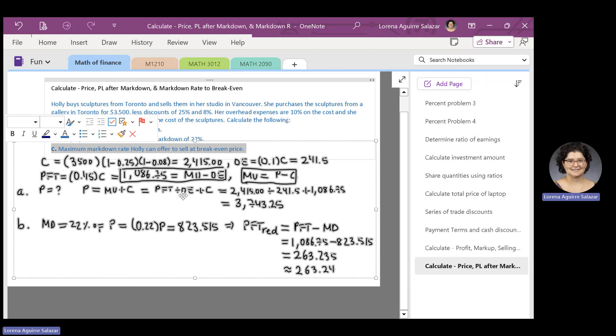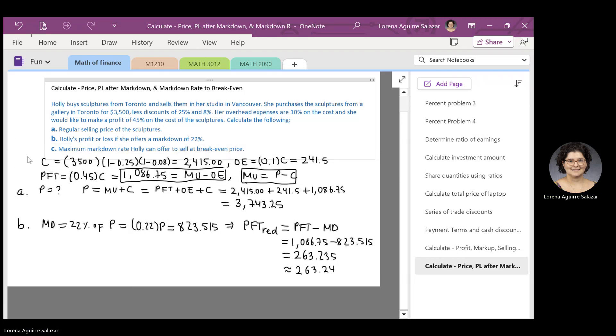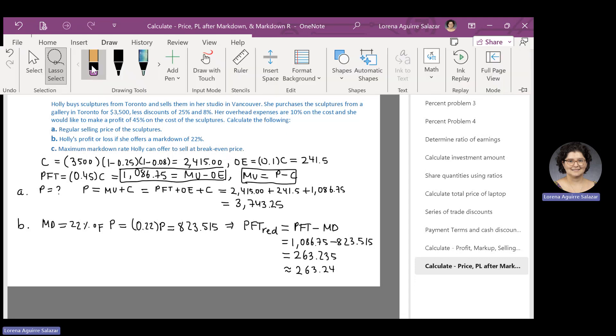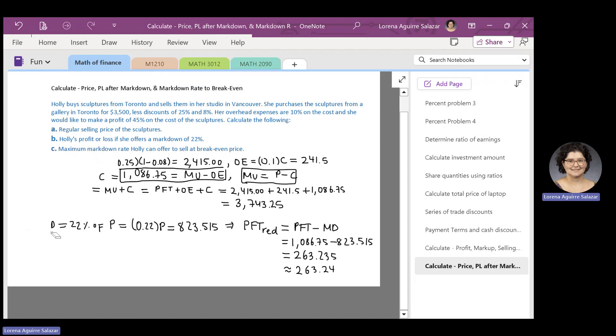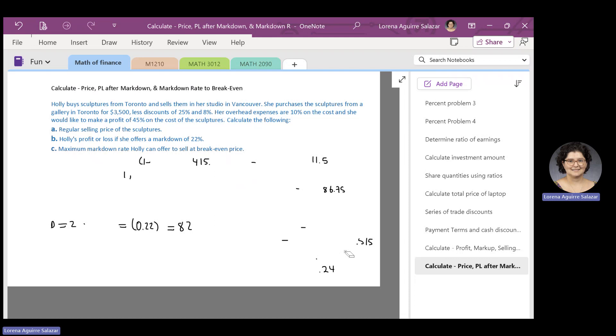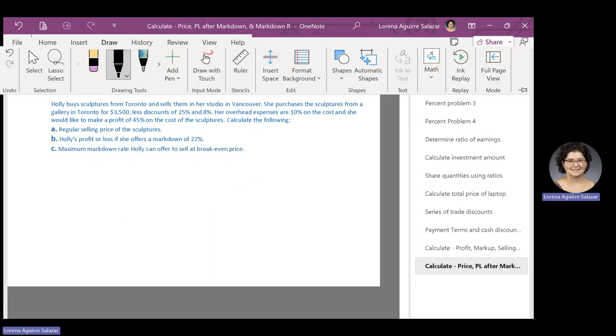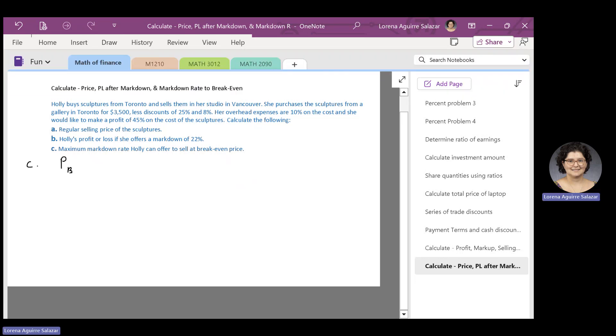The next thing we need to find is the maximum markdown rate that Hoed can offer to sell at break-even price. So, let's find the break-even price first, and then we find the markdown rate in terms of that break-even price and the price and 100 percent. So, for part C, the break-even price can be found by adding cost and overhead expenses.